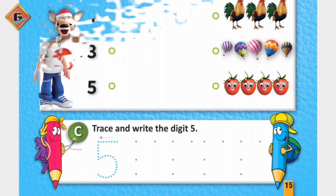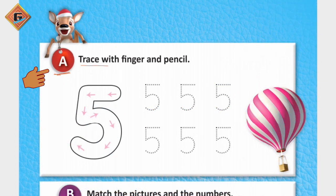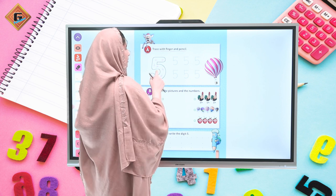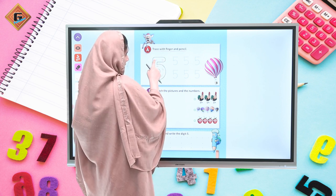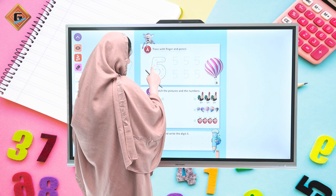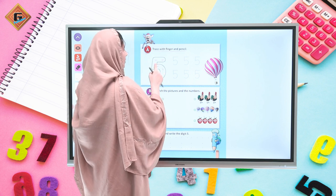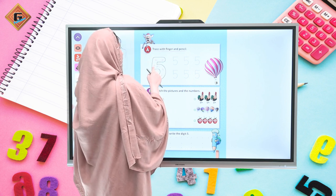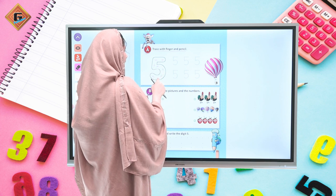First of all, we have to do Part A: trace with finger and pencil. What we have to do is trace with finger, and after that we practice it with the help of pencil. What we have to do is write in pencil number 5. Straight line, standing line, and a curve like this. Straight line, a small standing line, then make a curve like this.